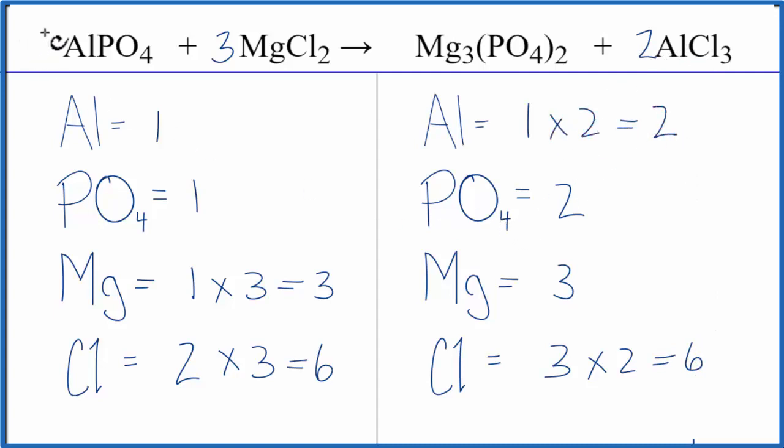Might as well put a two in front of the AlPO4, the aluminum phosphate. So we have one times two for the aluminum, that gives us two. And now we have one phosphate times the two, that gives us two. And we're done. This equation's balanced.